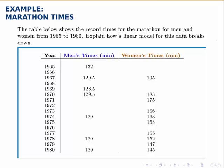Here's another example where a linear model breaks down. This table gives record times for the marathon for the men's race and the women's race over a period of about 15 years.